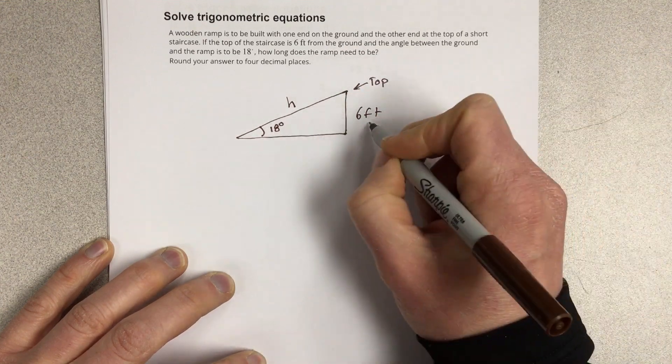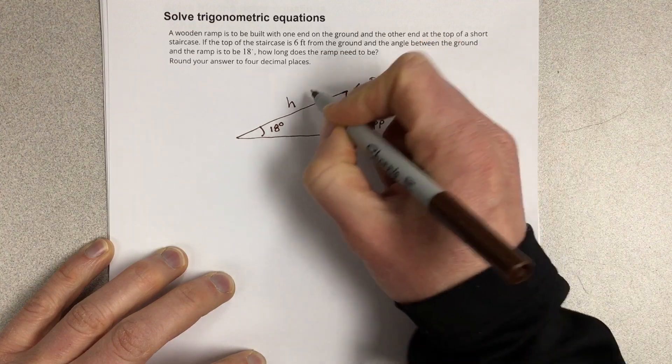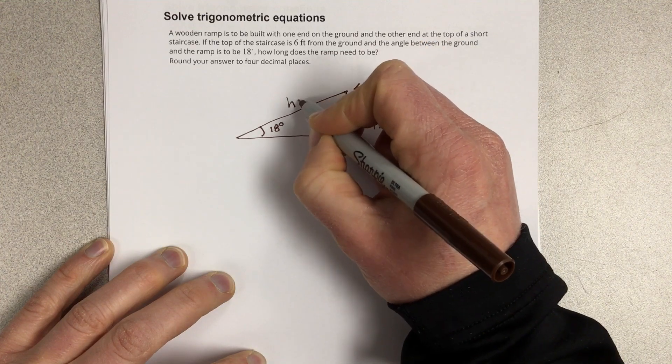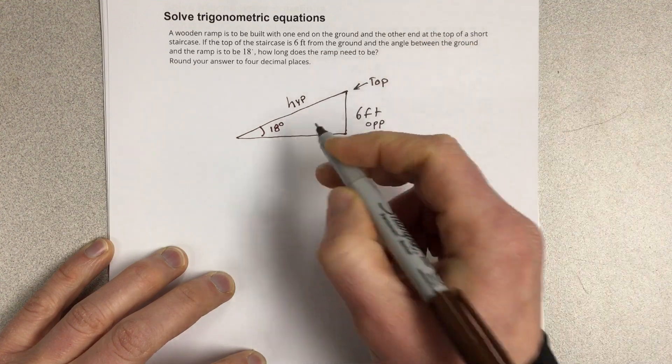To find that, that's the opposite side, and this is the hypotenuse. So I'm going to use sine here.